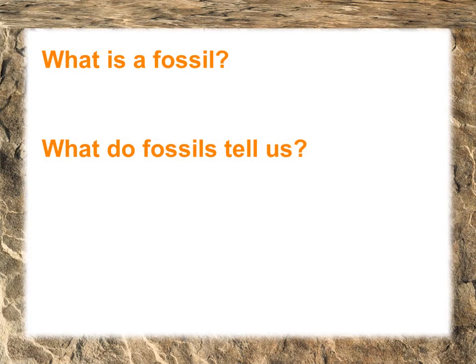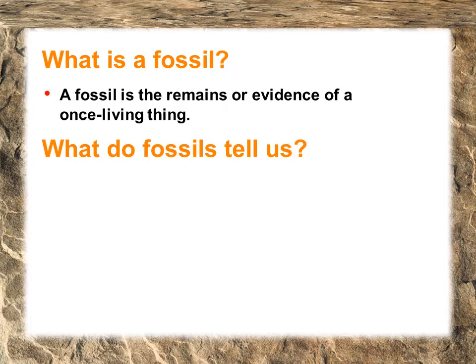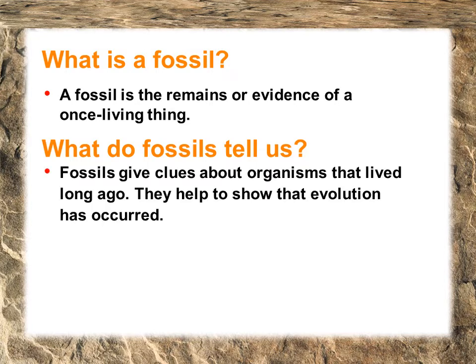Before we get into more detail, let's look at what a fossil is. A fossil is the remains or evidence of a once living thing. Fossils give us clues about organisms that lived long ago. Through the fossil record, we can look at fossils over time, and it shows us evolution. We can also use fossils to show us how the climate and surface has changed on Earth.